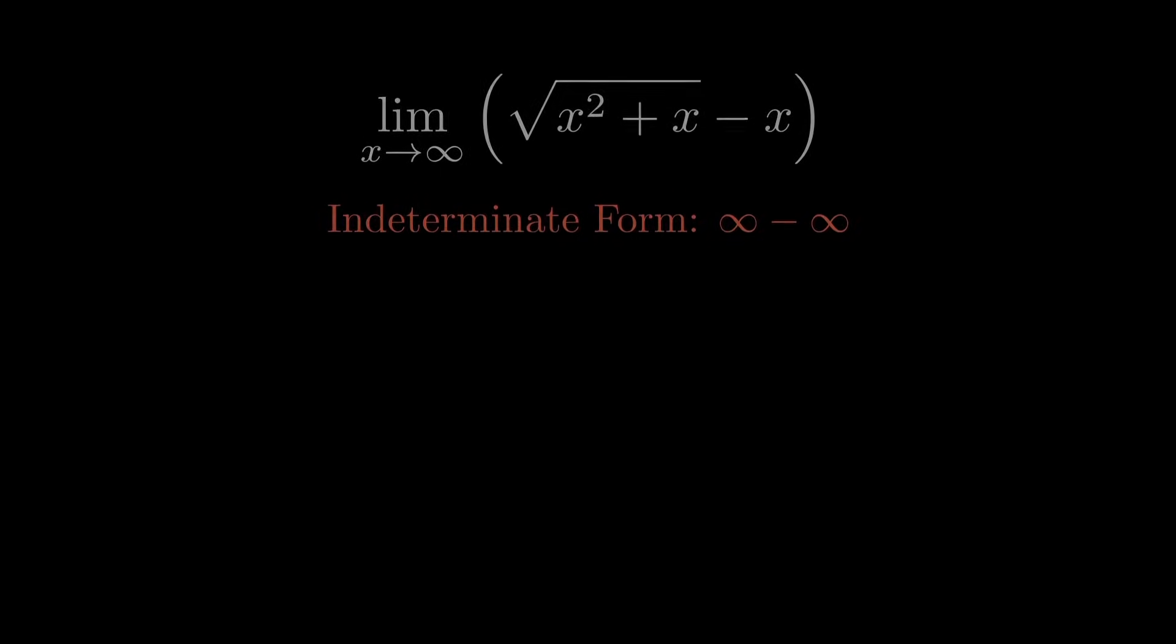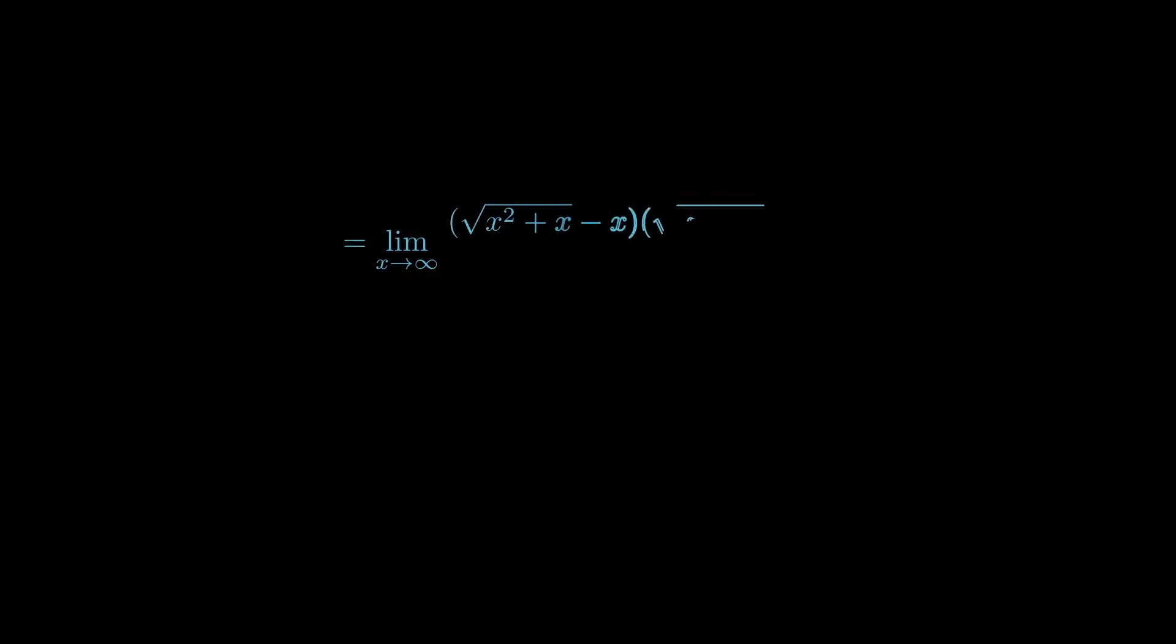But we can resolve this situation by manipulating the expression. Let's multiply by the conjugate here. We can simplify the numerator, divide the top and the bottom by x, and now we can actually evaluate this limit, since as x tends to infinity, 1 over x tends toward 0.